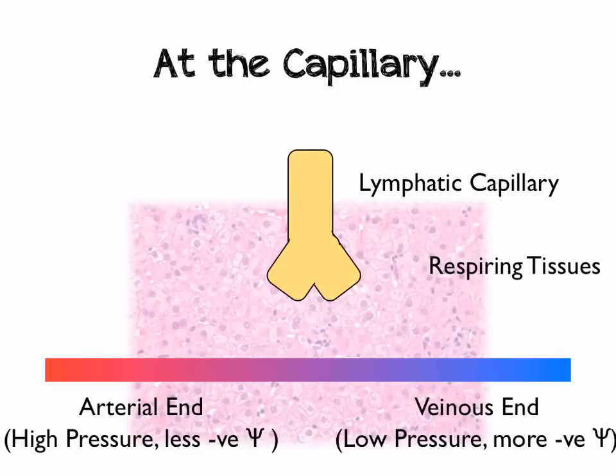Here's a capillary, or part of a capillary network, and around it we've got the respiring tissues, which are going to need useful stuff transported in the blood. We've also got this funny-looking capillary at the top, called a lymphatic capillary, or a blind-ending tubule, which is basically the entrance into the lymphatic system.